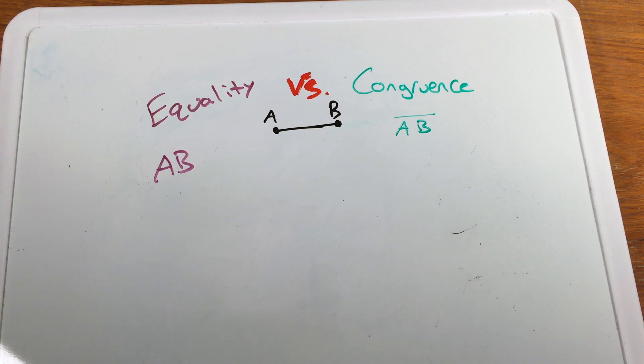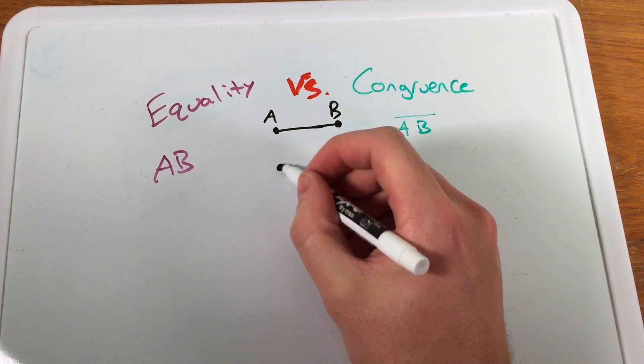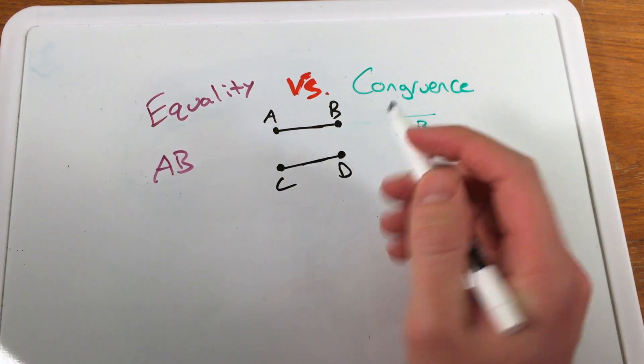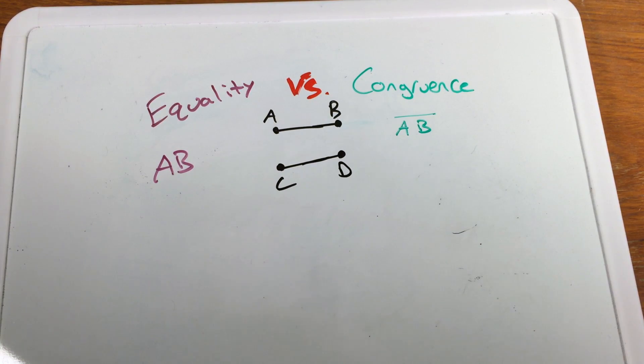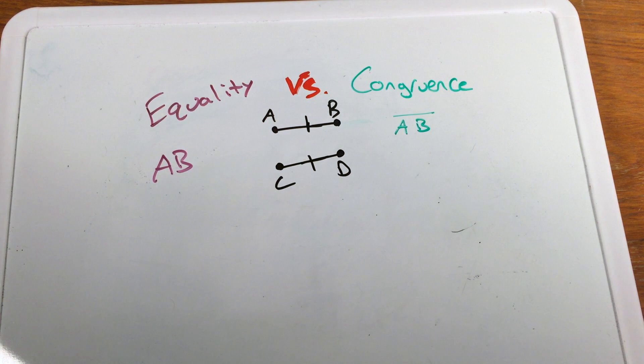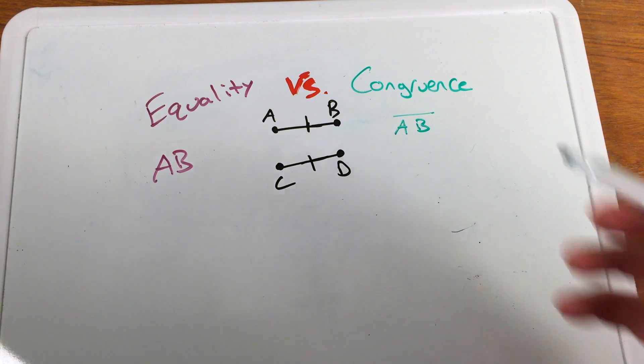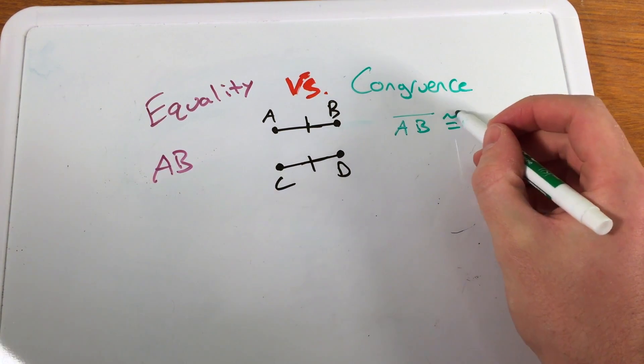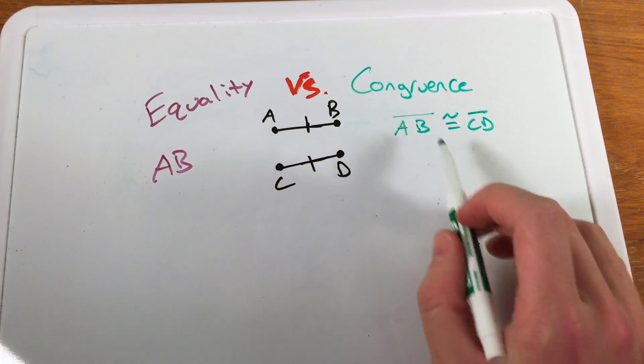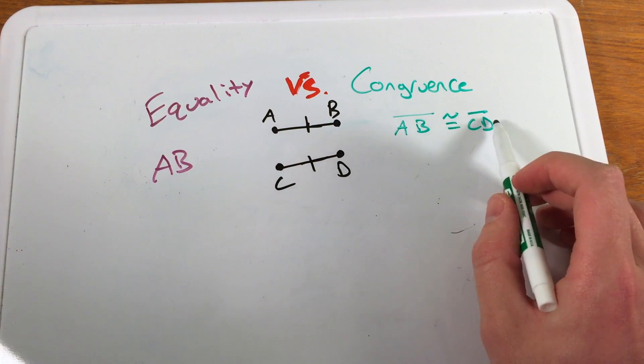If we have another segment, let's call it CD. We can see that if I want to say that CD is congruent to AB, we have a single dash here to show our congruence between these two segments. If I was going to say AB, the segment itself, is congruent to segment CD, I would write it as such. AB with a bar up top is congruent to segment CD, again referring to the segments themselves.